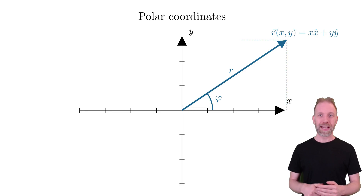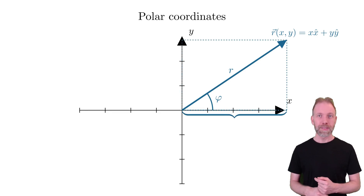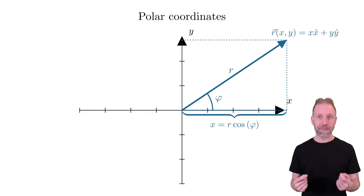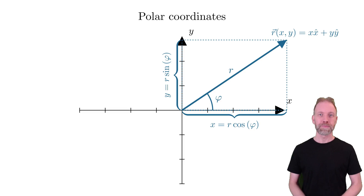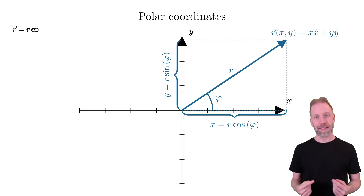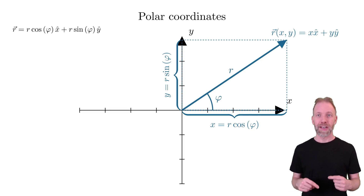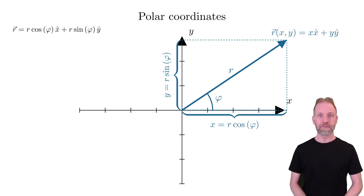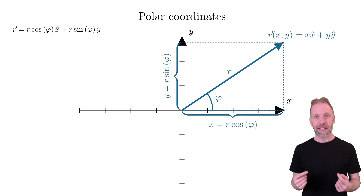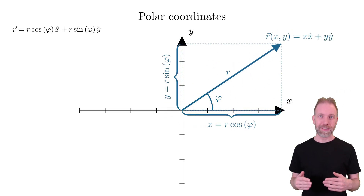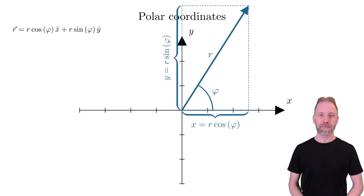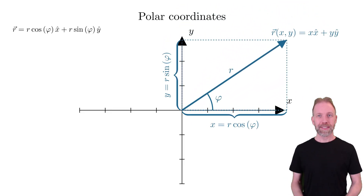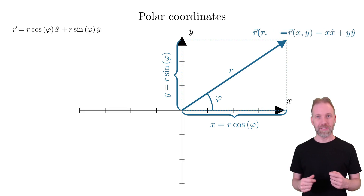Assume that we know the length r and the angle phi. Then we can calculate the x value as r cos phi, and the y value is given by r sin phi. Hence, we can express the position vector as r cos phi x-hat plus r sin phi y-hat. To visualize it, look at how x and y change as we change the radius r and the angle phi. We can say that the position is a function of r and phi.